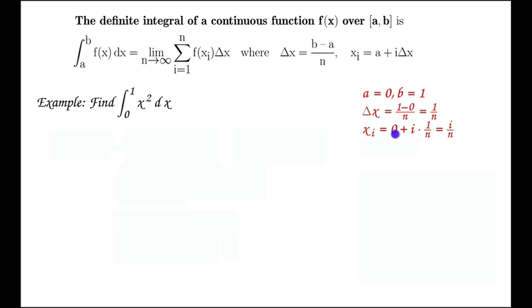We can also, from this, compute what X_i is. X_i is the A value, which is 0, plus i times 1 over n. That just turns out to be i over n. So we know the X_i. We know the delta X. F of X is the integrand. F of X is just going to be X squared.